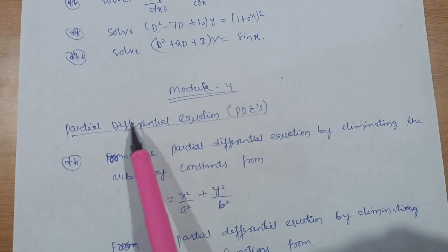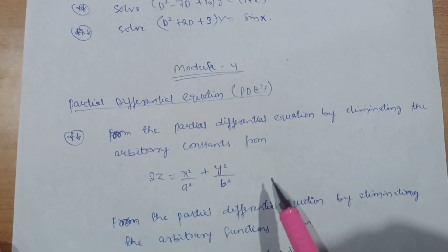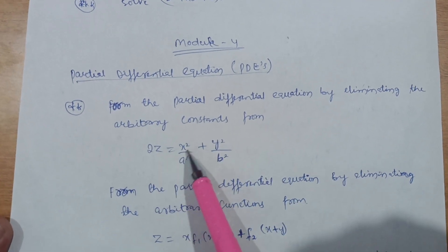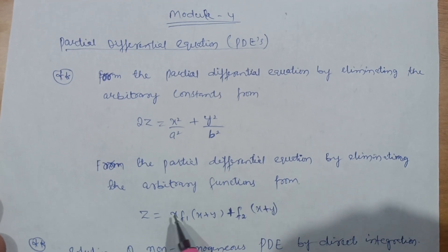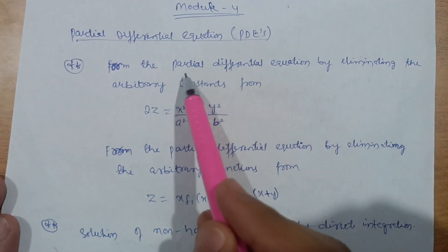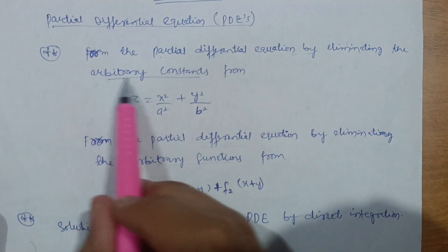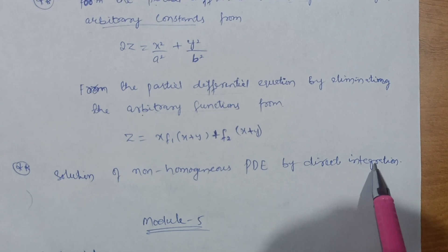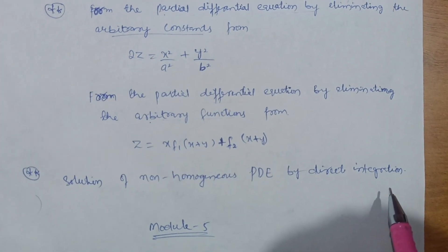In Module 4, focus on partial differential equations. You can score at least 10 marks by covering: forming PDEs by eliminating arbitrary constants (e.g., from 2z = x²/a² + y²/b²), and forming PDEs by eliminating arbitrary functions (e.g., from z = x·f₁(x+y) + f₂(x+y)). Also, solve non-homogeneous PDEs by direct integration. With just the first two concepts you can score about 12 marks.